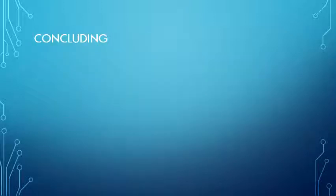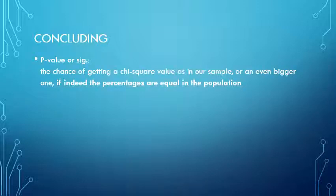Let's do some concluding. This is where things might become a bit tricky. We already discussed that the p-value or significance for this test is the chance of getting a chi-square value as in our sample, or an even bigger one, if indeed the percentages are equal in the population.